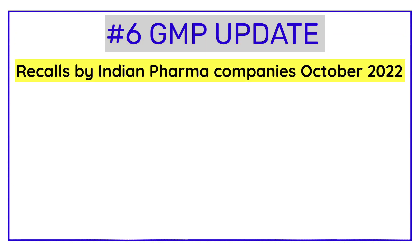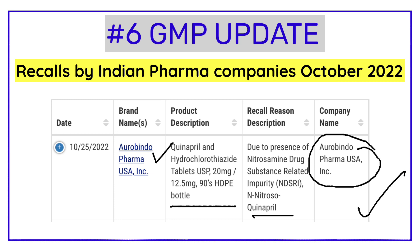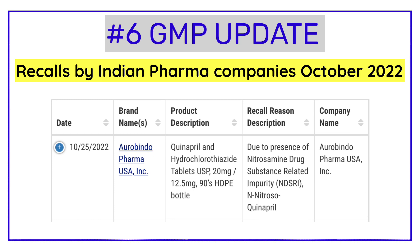The last GMP update covers recalls initiated by Indian pharmaceutical companies in October 2022, visible on the USFDA website. Aurobindo Pharma initiated a voluntary nationwide recall of two lots of quinapril and hydrochlorothiazide tablets USP 20 mg/12.5 mg due to the presence of nitrosamine impurities. This product is indicated for treatment of hypertension to lower blood pressure. Exposure to nitrosamine impurities above acceptable levels or over a long period of time may increase the risk of cancer.